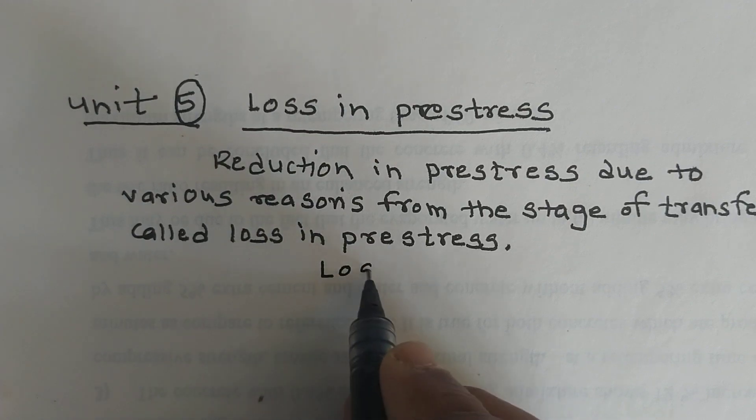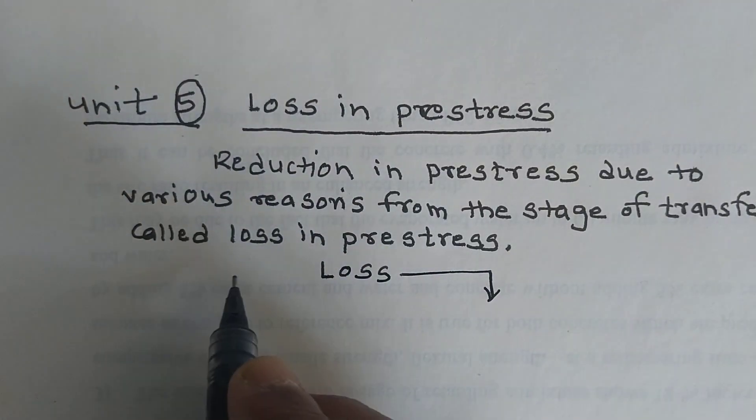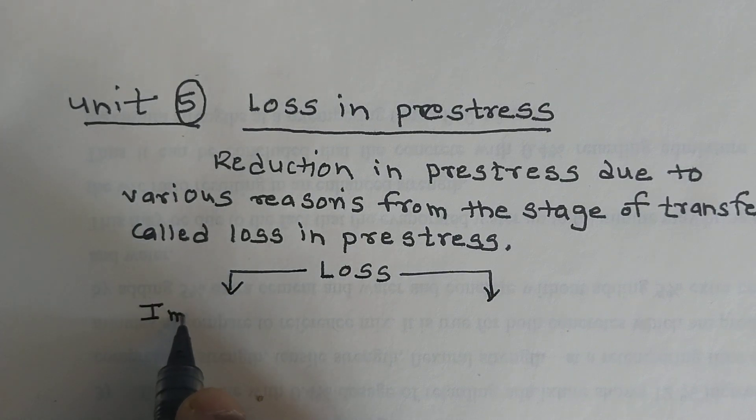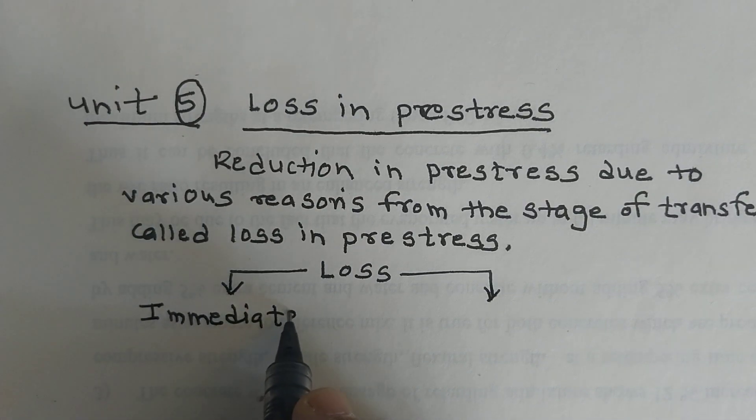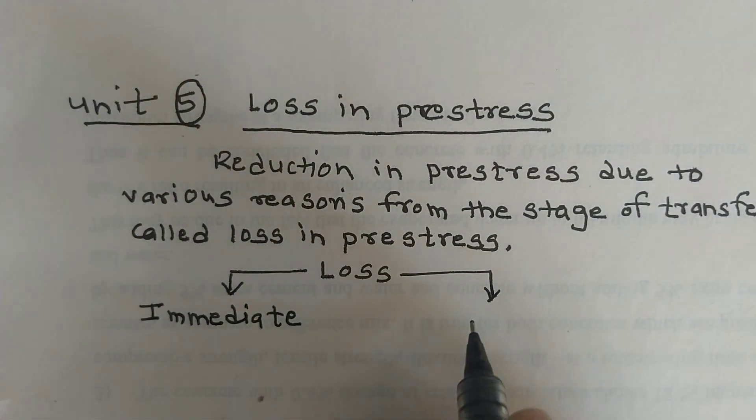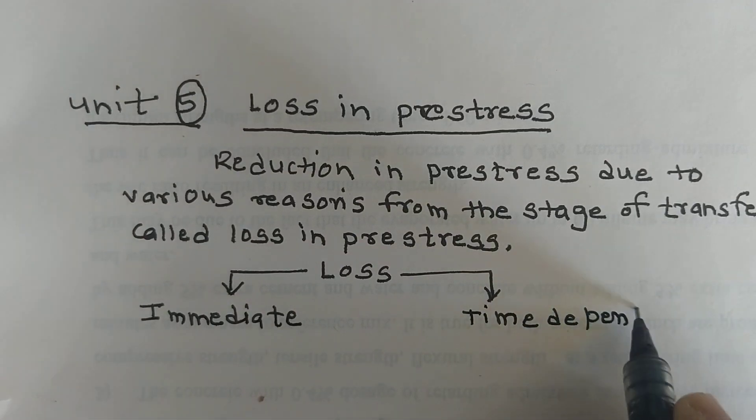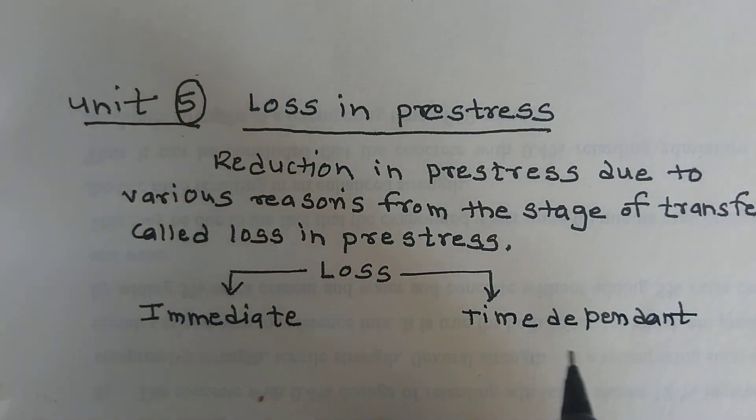So loss is mainly classified in two categories. One is immediate loss, second is time dependent loss.